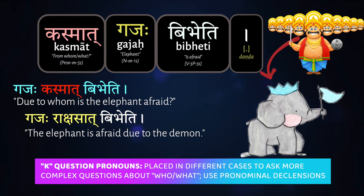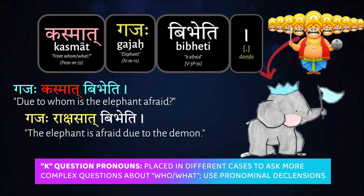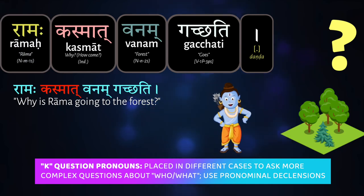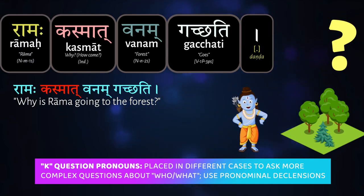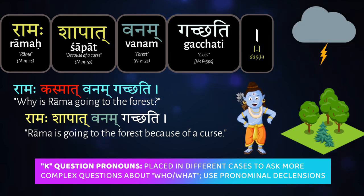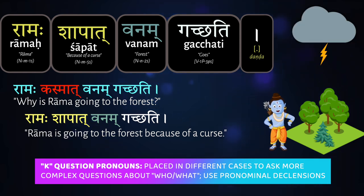We can also note that kasmāt itself can function as a frozen pronominal indeclinable meaning 'why.' So 'Rāmaḥ kasmāt vanam gacchati' — why does Rāma go to the forest? 'Rāmaḥ śāpāt vanam gacchati' — he goes to the forest because of the curse. We've already seen this.